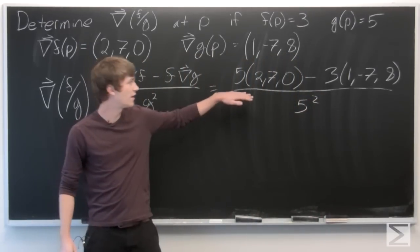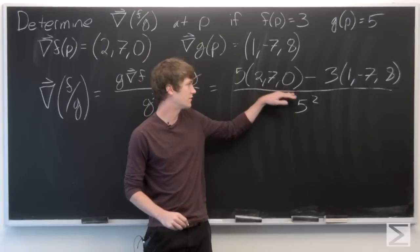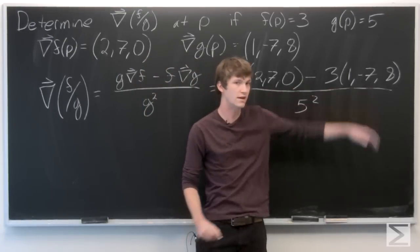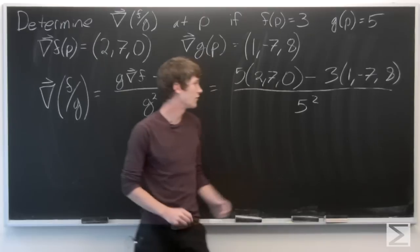So we see that we have 5 times the vector (2, 7, 0) minus 3 times the vector (1, -7, 8) over 5 squared.